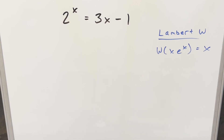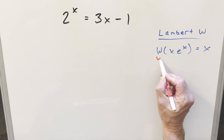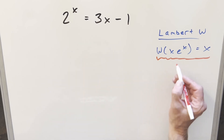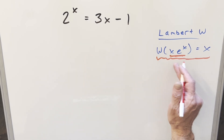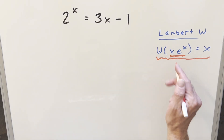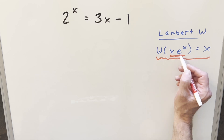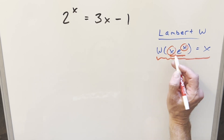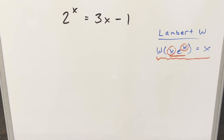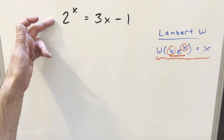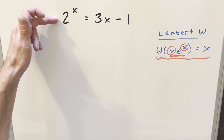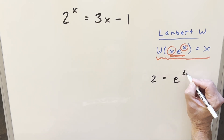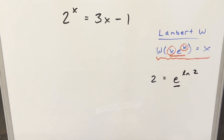My strategy here is all about getting the equation into the form x·e^x. We need to rearrange it so we have the same thing in the exponent and as the coefficient on e. The first problem is there's no e in this problem, but for the base 2, I can write this as e^(ln 2), and then we've created our e.